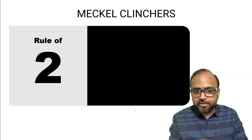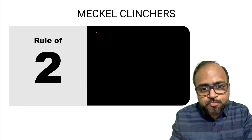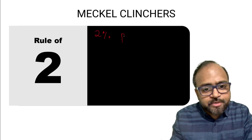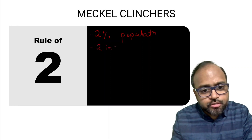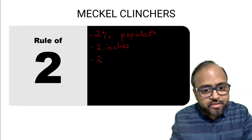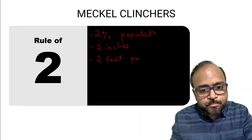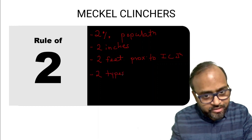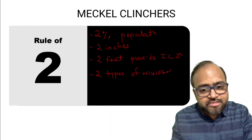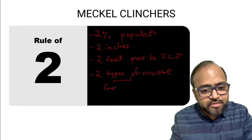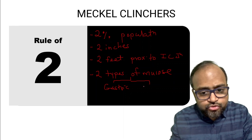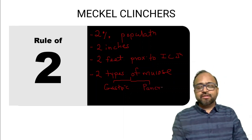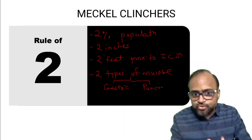The rule of two is important to know about Meckel's. It is seen in approximately 2% of the population. The length of Meckel's is usually 2 inches on average. Its location is around 2 feet proximal to the ileocecal junction. It usually has two types of mucosa — ectopic gastric mucosa, which we have discussed, or it could occasionally also have ectopic pancreatic mucosa.